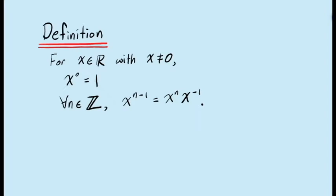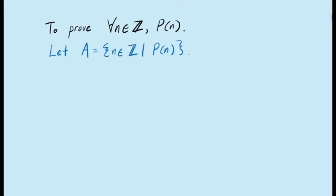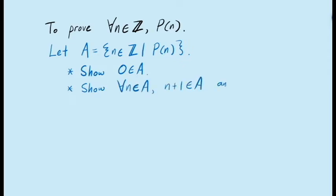There is also a version of the principle of mathematical induction that can be used to prove statements for all integers rather than just statements for all natural numbers. It works like this: for a given set A, if we can prove that 0 is an element in A, and for all values of n in A, both n plus 1 and n minus 1 belong to A, then we get that all integer values of n belong to the set A.